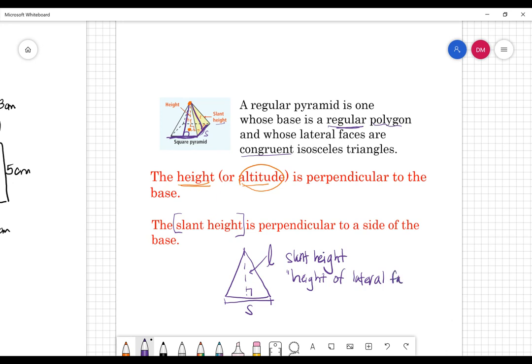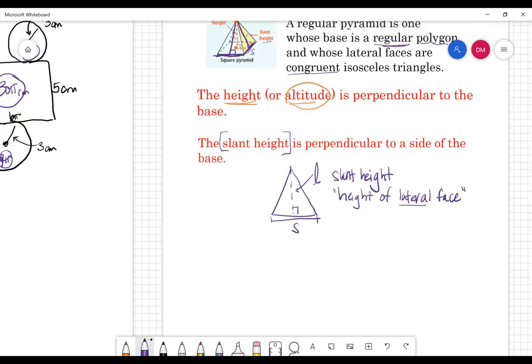But L for lateral. It makes sense that if this is the height of the lateral face, that we could use L with it. So that's maybe another good way for you to remember to use slant height is it's the height of, I'm trying to do two things at once, the height of the lateral face. And because it's the lateral face, we use cursive L.